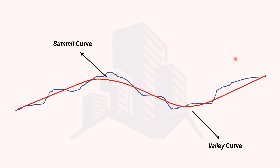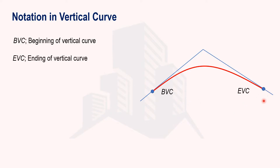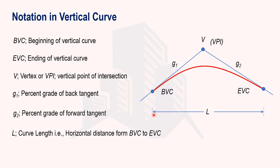To proceed with the derivation of the vertical curve formula, we need to know some basic notations — similar to those used for horizontal curves in simple circular or compound curves. The start point of the curve is represented as BVC (Beginning of Vertical Curve). The end point is EVC (End of Vertical Curve). The point where the gradients meet is called the vertex or Vertical Point of Intersection (VPI). G1 is the gradient of the back tangent, G2 is the gradient of the forward tangent, and L is the horizontal distance from BVC to EVC.